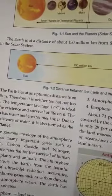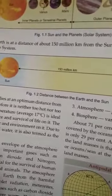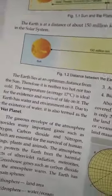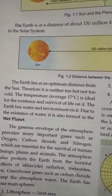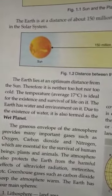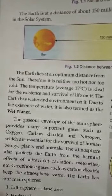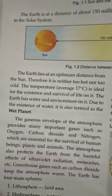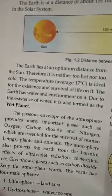The earth is at a distance of about 150 million kilometers from the Sun. The earth is the only planet which is having life, and there are certain reasons behind it. From whatever we know about the universe and our solar system, only the earth is a planet which supports life. The first reason is its distance from the Sun — the earth has an optimum distance from the Sun.